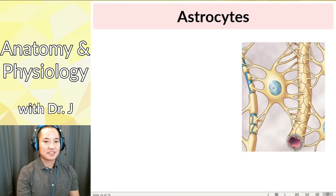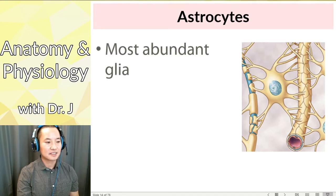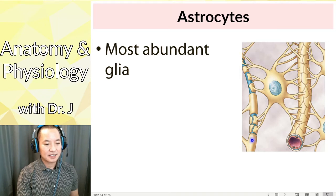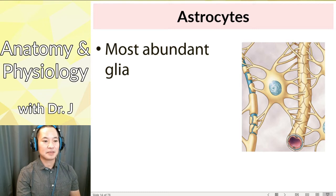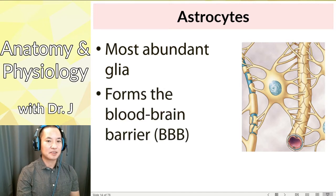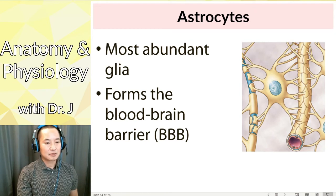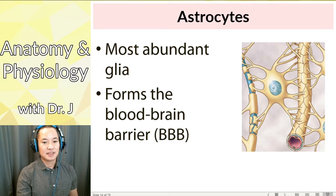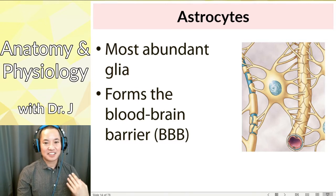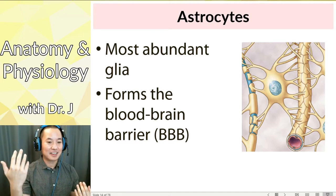Astrocytes — 'astro' like astronaut or astronomy, dealing with stars — are the most abundant glia. They form a cobblestone-like arrangement along blood vessels. This is a cool thing about astrocytes: they form a protective barrier called the blood-brain barrier. When you take a drug and it enters your bloodstream, many drugs have a hard time crossing this blood-brain barrier that astrocytes form, which also prevents everything you eat from affecting your brain.